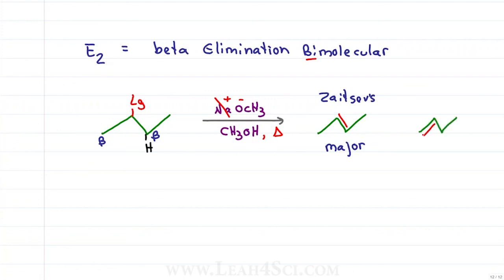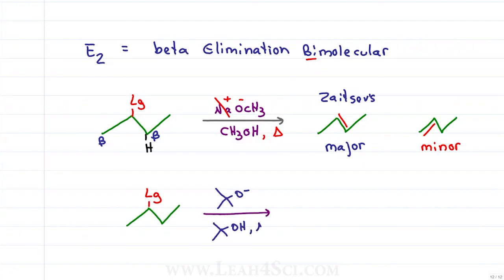Eliminating the less substituted beta hydrogen will give us the minor product. The one exception to Zaitsev's rule is if we have a big bulky base such as tert-butoxide — it is so large it can only reach the less substituted hydrogen, giving us the non-Zaitsev or Hofmann product as the major product.